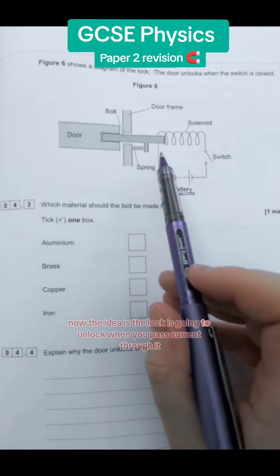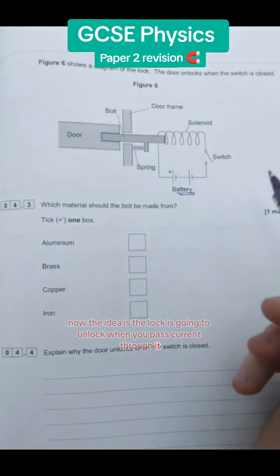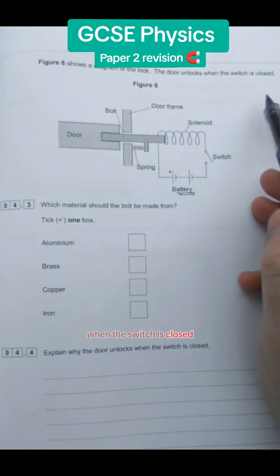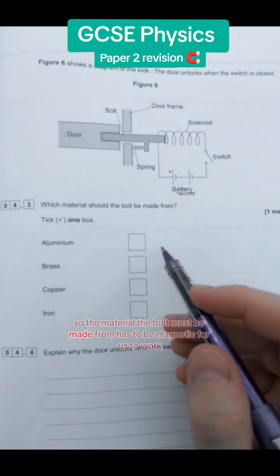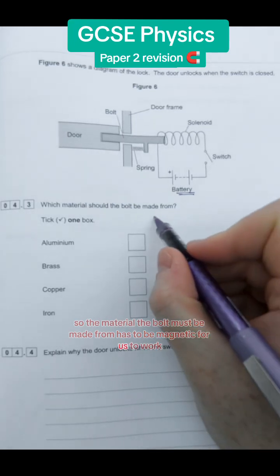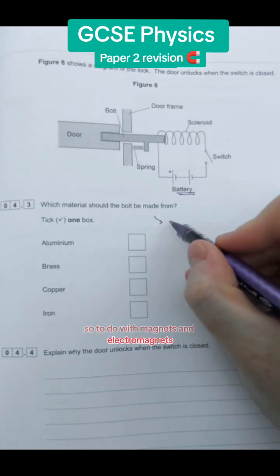Now the idea is that the lock is going to unlock when you pass current through it. It says that in the question when the switch is closed. So the material the bolt must be made from has to be magnetic for this to work. It's all to do with magnets and electromagnets.